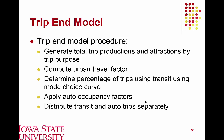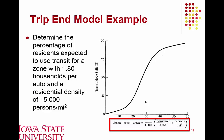This is slightly different from the traditional four-step travel demand model in that we're applying separate models for each available mode. As an example: to determine the percentage of residents who will use transit in a zone that has 1.8 households per automobile and a residential density of 15,000 persons per square mile, we calculate the urban travel factor — a relationship between auto ownership and population density. As this urban travel factor gets larger, meaning fewer automobiles per household or higher population density, we expect a larger percentage of people to use transit.